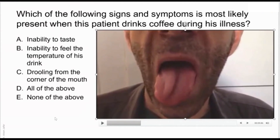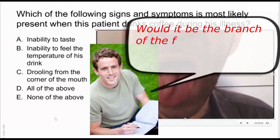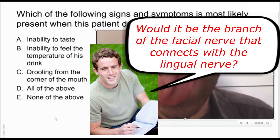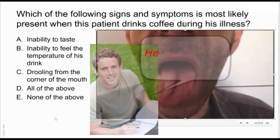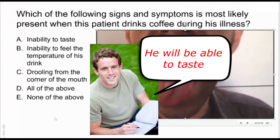Which nerve is responsible for taste? The anterior two-thirds of the tongue is served by the facial nerve (chorda tympani), and the posterior third by the glossopharyngeal and vagus nerves. So will this patient be unable to taste during his illness? No — he will still have taste. Option A is incorrect.